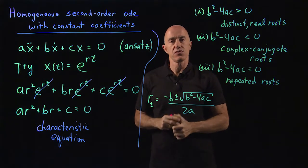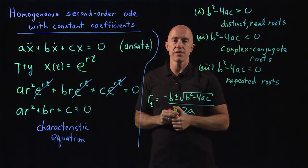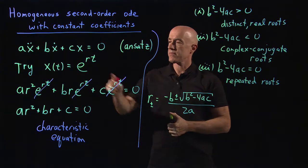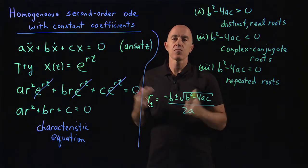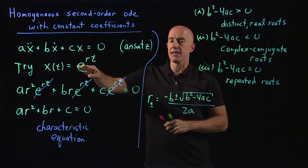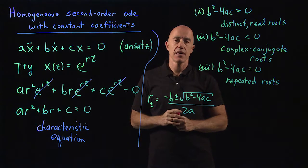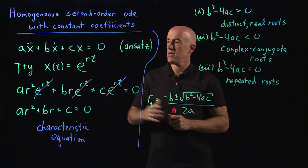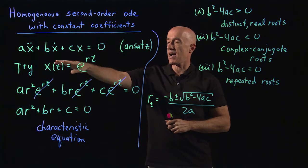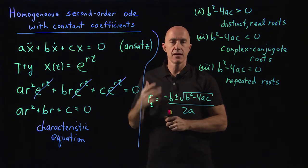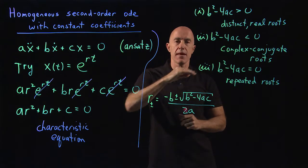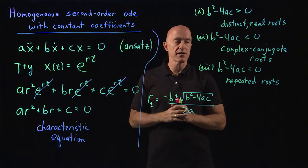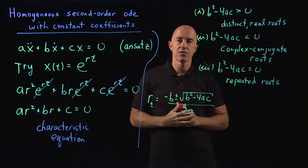In order to satisfy two initial conditions, we need a second solution. We don't know what the second solution is. What that means is that our ansatz has failed in the second solution case. The second solution is not in the form e to the rt. It's in a different form. So in this third case, then the main task for us will be to find that second solution.